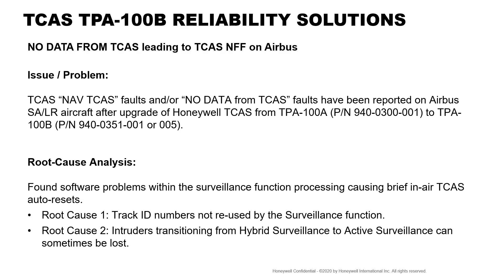Root cause analysis found software problems within the surveillance function processing, causing brief in-air auto-resets. There were two root causes identified. The first root cause was track ID numbers not being reused by the surveillance function. When the maximum track ID number of 255 was reached and the software tries to re-initiate a new intruder, no track ID number is available and a reset can occur.